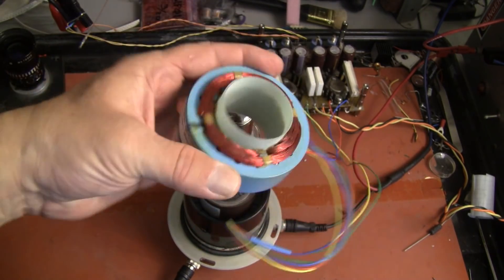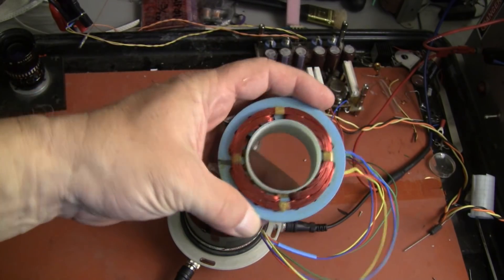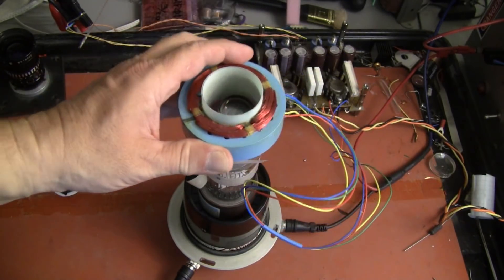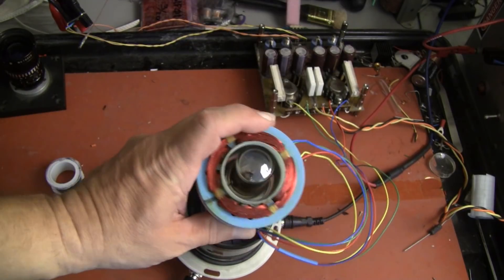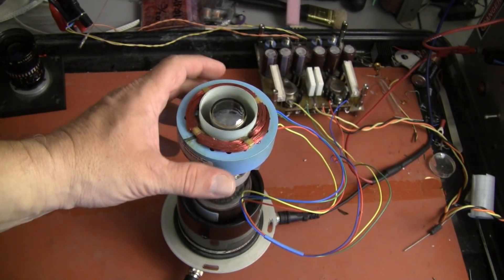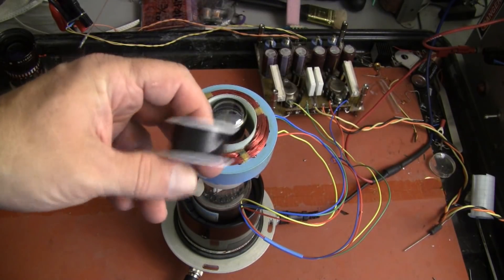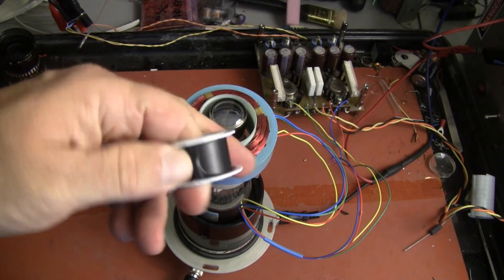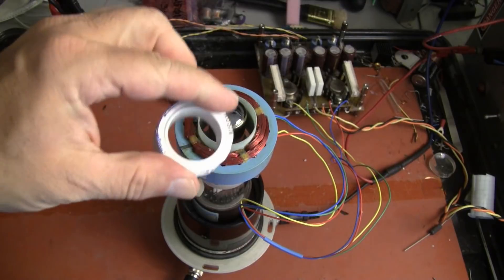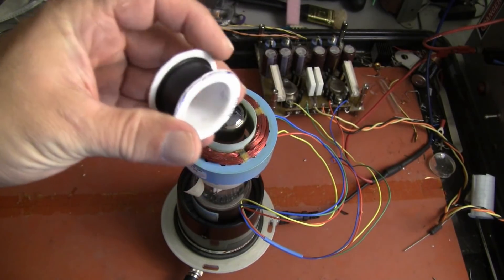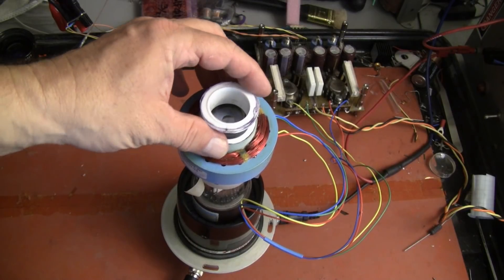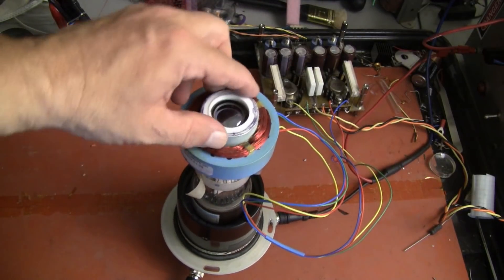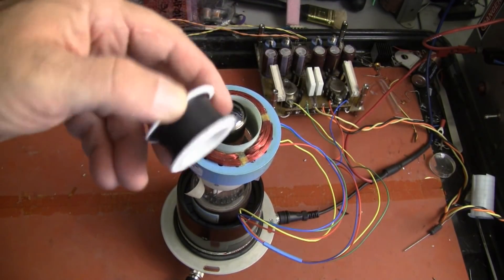This deflection yoke is intended for a CRT with a 1 and 5 eighths inch diameter neck, and so on this 1 inch diameter imaging tube, it's of course all over the place. So I made a little adapter. I took a spool of solder wick and removed the solder wick of course, and trimmed it so that one edge fits inside the deflection yoke and the other edge is just on the outside, and it works perfectly. I lined it with black tape to block light.